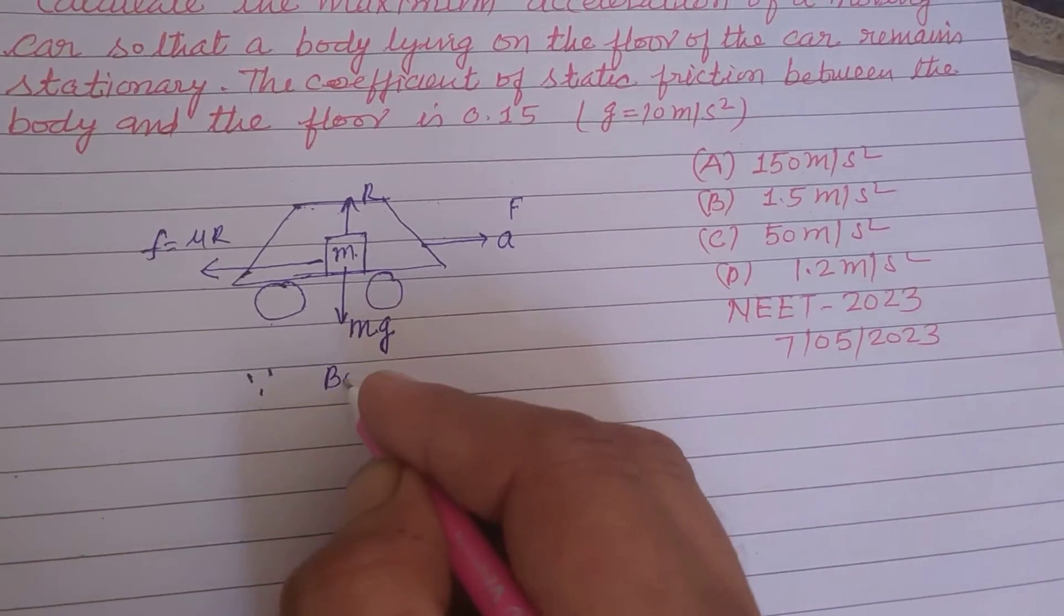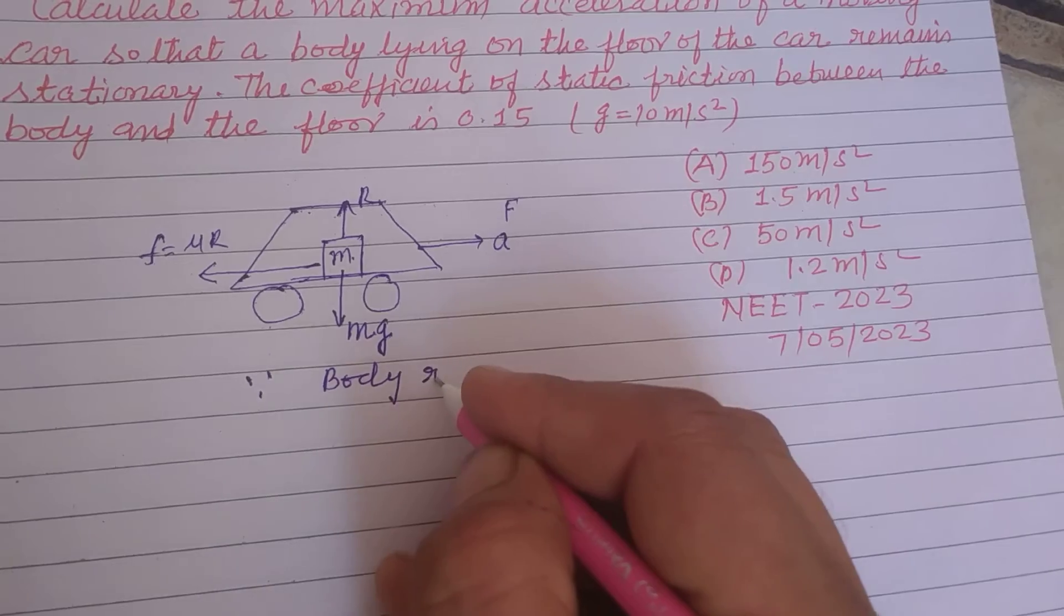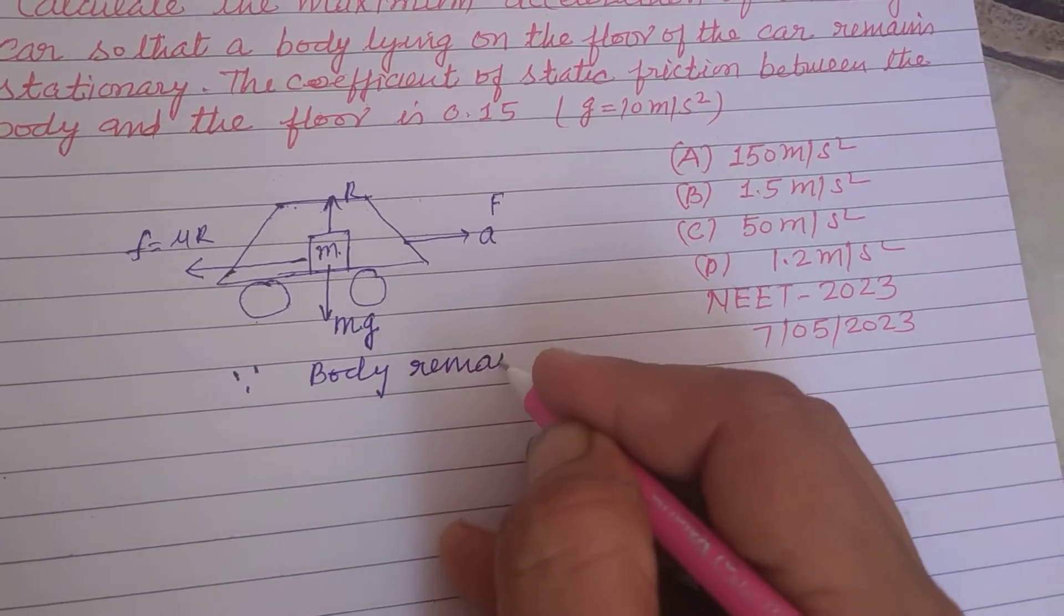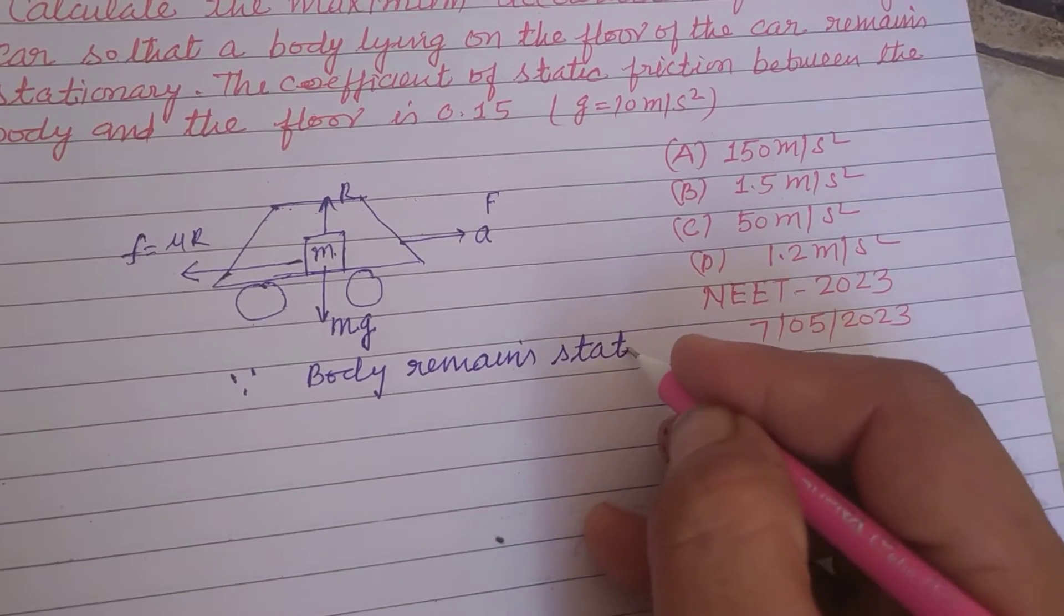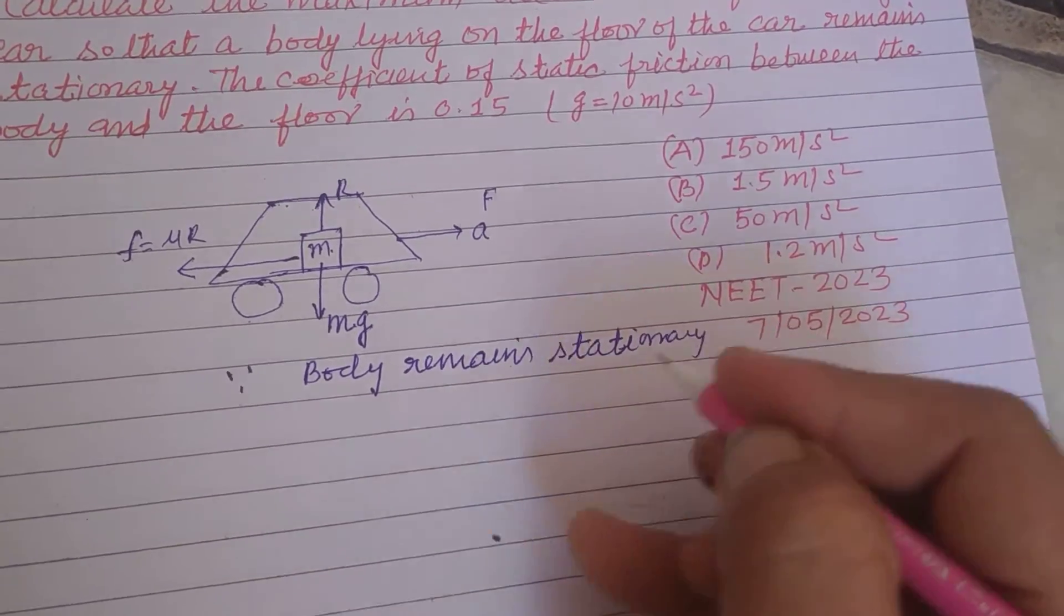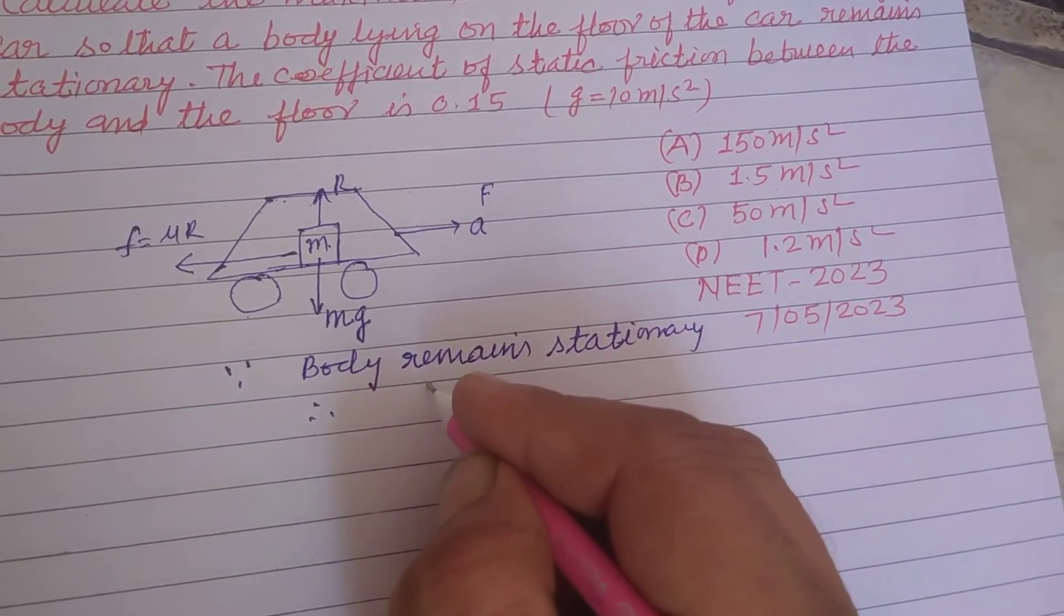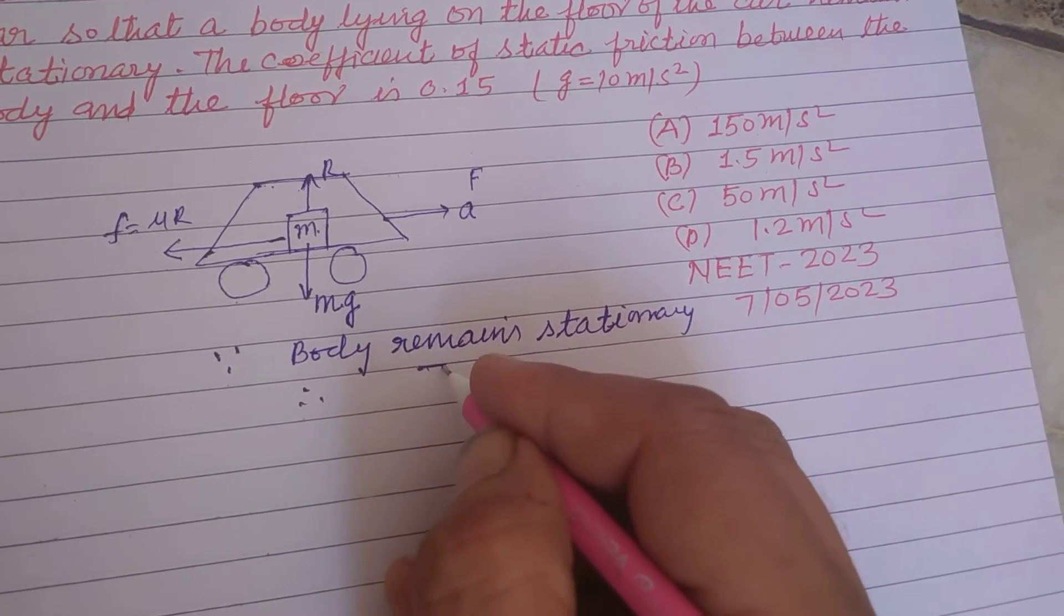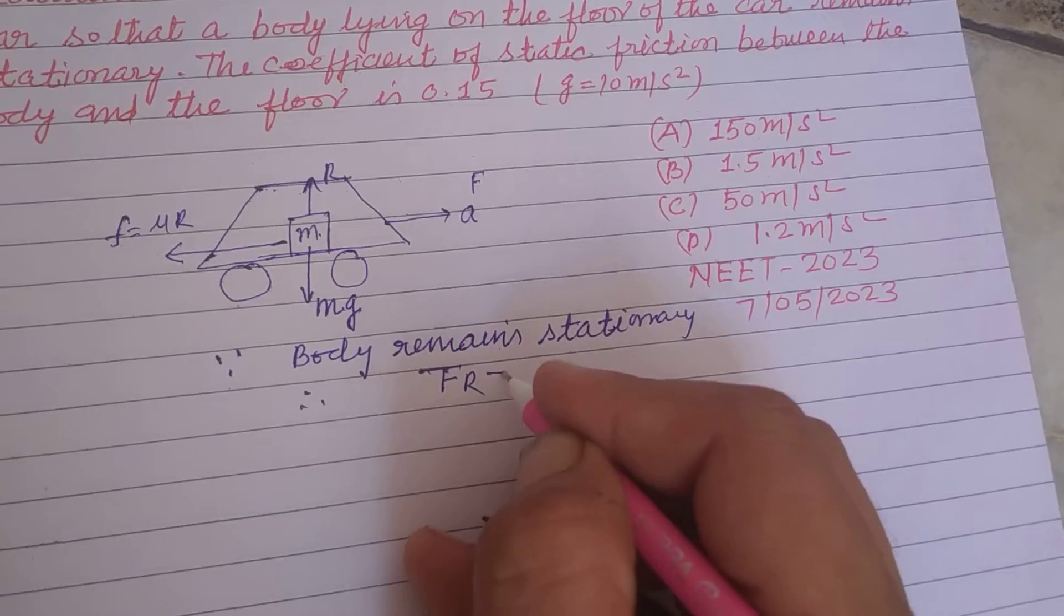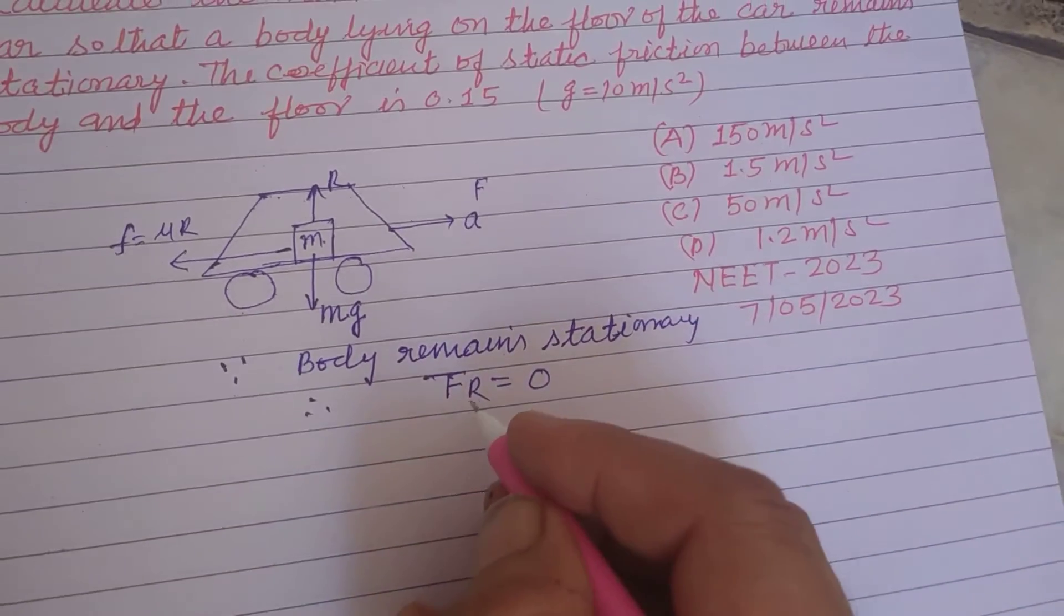Since body remains stationary, therefore total force or resultant force FR is 0.